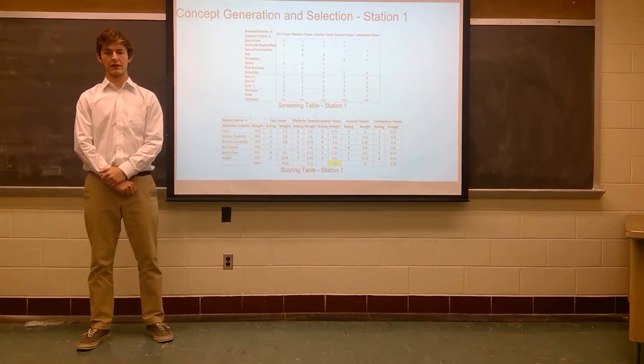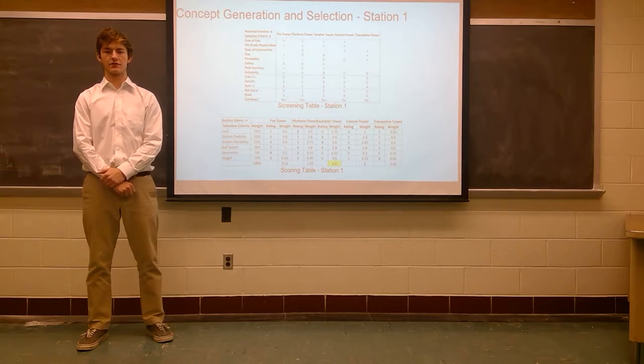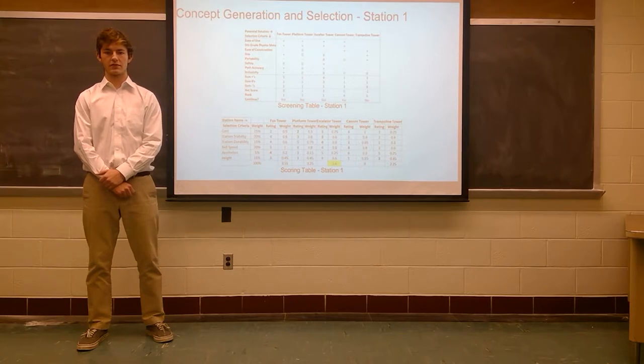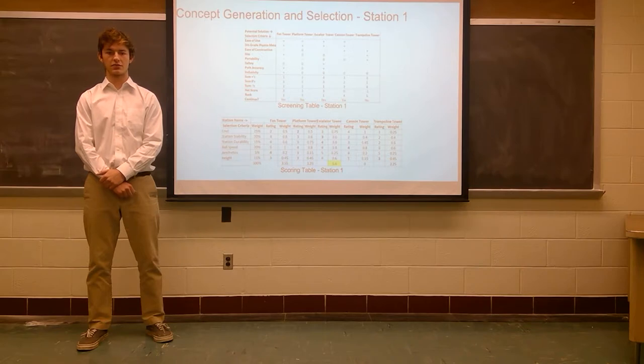For each of our stations, we began to create ideas by having each of us draw five designs on a poster. Then each separate design was combined to create a station that would then be analyzed to see how well it would work for our purpose. We analyzed these stations using a screening table and a scoring table to determine what we wanted to move forward with as a group. Station one provides an entertaining and meaningful presentation of fifth grade physics concepts of potential and kinetic energy. Both tables agreed that the escalator tower would be the chosen station after scoring the highest on each table. The escalator tower had a lower cost, lower height requirement, and an easier assembly than the highest scoring stations.